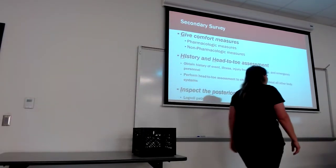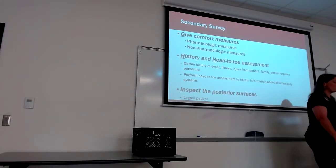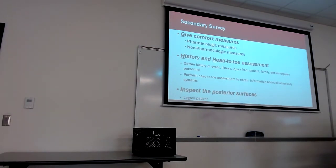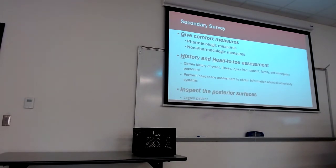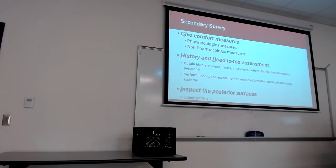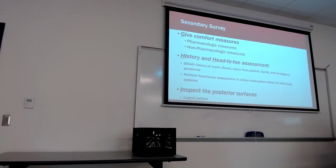Some things we look for on the posterior side: bruising, exit wounds or entry wounds for gunshots. We look at the spine — what does it look like? If abuse is occurring, what signs do we see? Handprints, rope marks, cuts — those types of things. We're just thoroughly examining the entire posterior side of the patient.